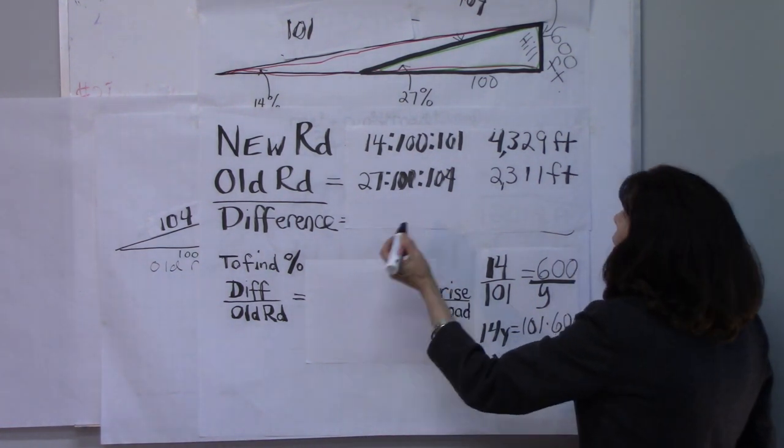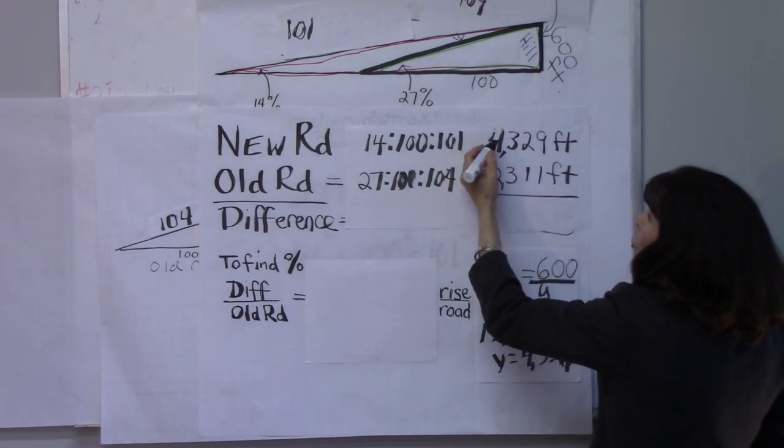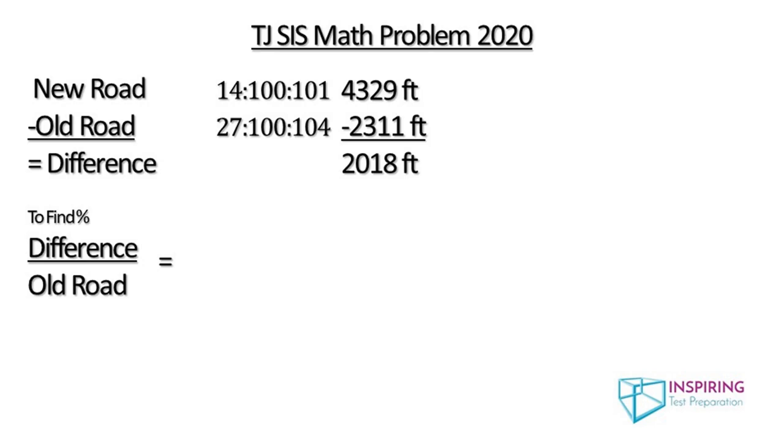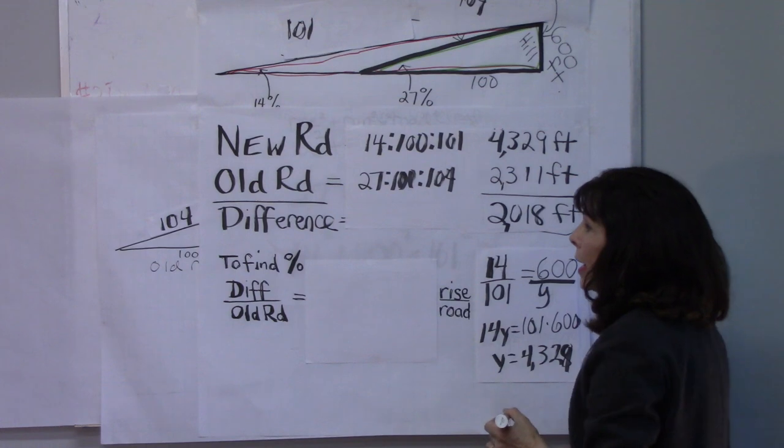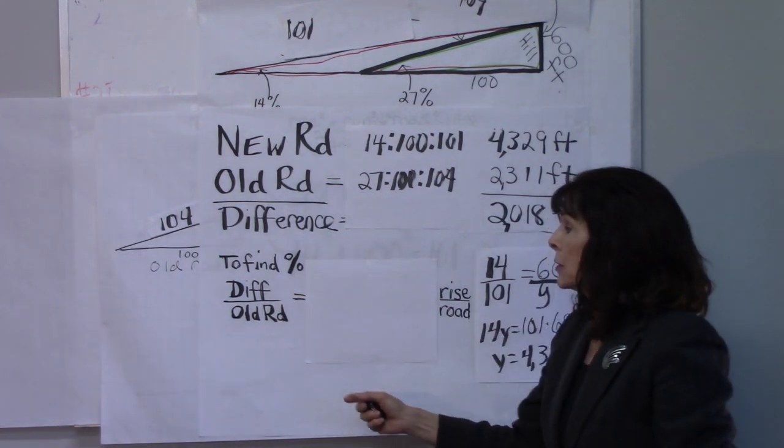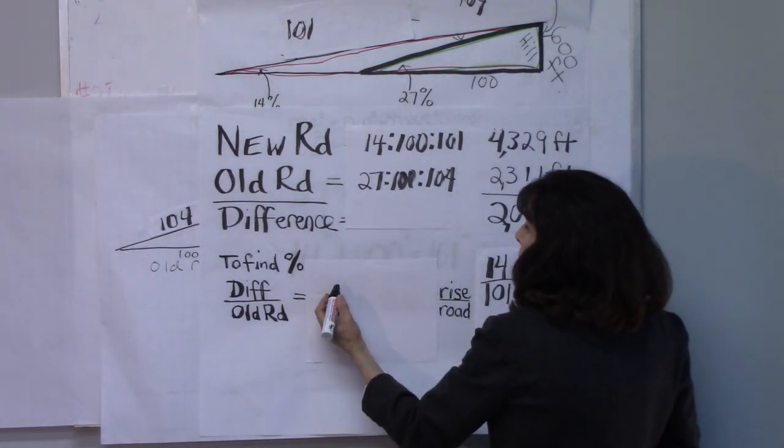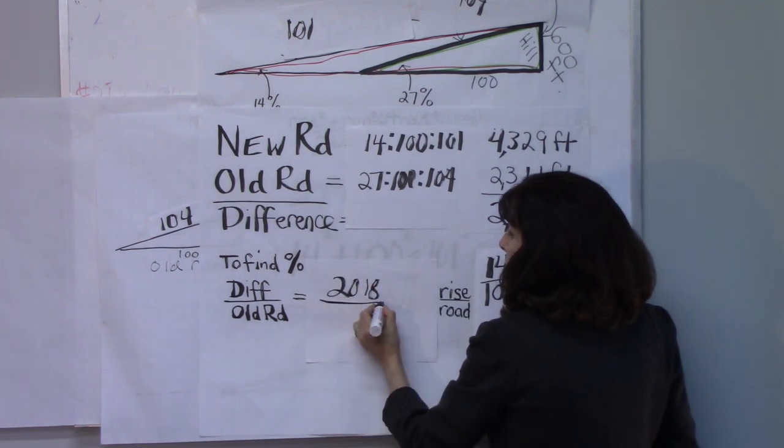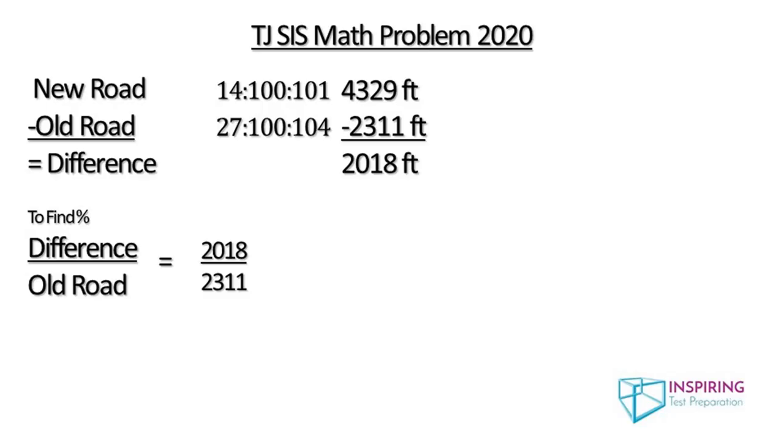Now, the difference is the new road minus the old road gives us a difference of 2,018 feet. And that is the difference in length. So, to find the percent difference, we divide, we take the difference, 2018, and divide it by the old road, which was 2,311. And when we do that calculation, we get 87%.